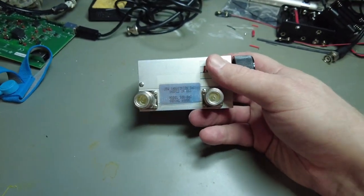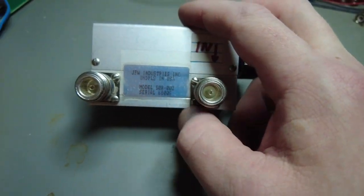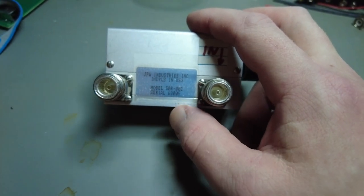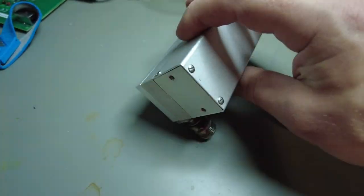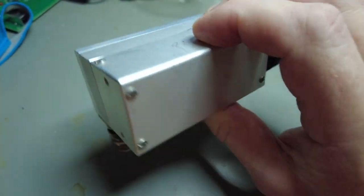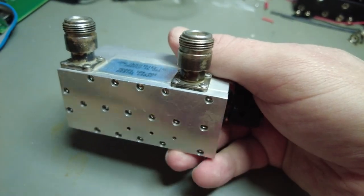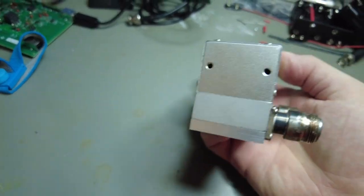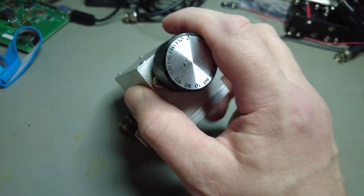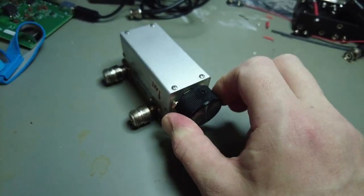The interesting part is that this is made by JFW Industries in USA and there's a sticker here, so it's designed not to be opened. Though when you place this many screws everywhere, well it's bound to be that someone will one day open it. Let's see how far we'll get and what's actually inside this variable attenuator.